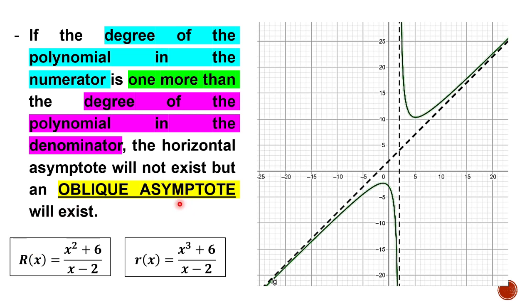But if the degree of the numerator is only one more than the degree of the denominator, then there is an oblique asymptote. In the given rational function, it has an oblique asymptote because the degree of the top is only one more than the degree of the bottom.